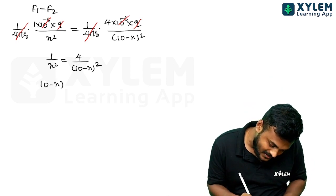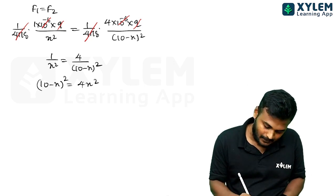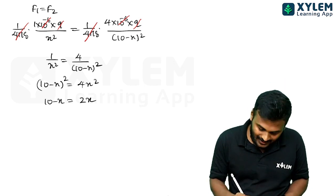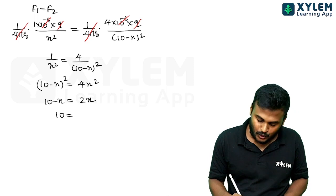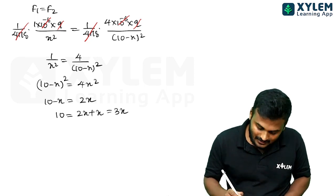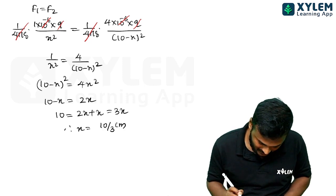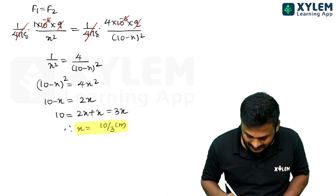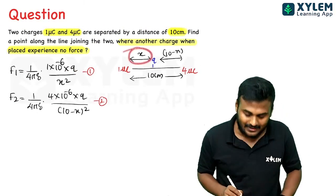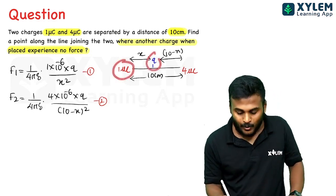Cross multiplying: (10 - x)² = 4x². Taking square root: (10 - x) = 2x. So 10 = 2x + x = 3x. Therefore x = 10/3 centimeters. The third charge must be placed at 10/3 cm from the 1µC charge.